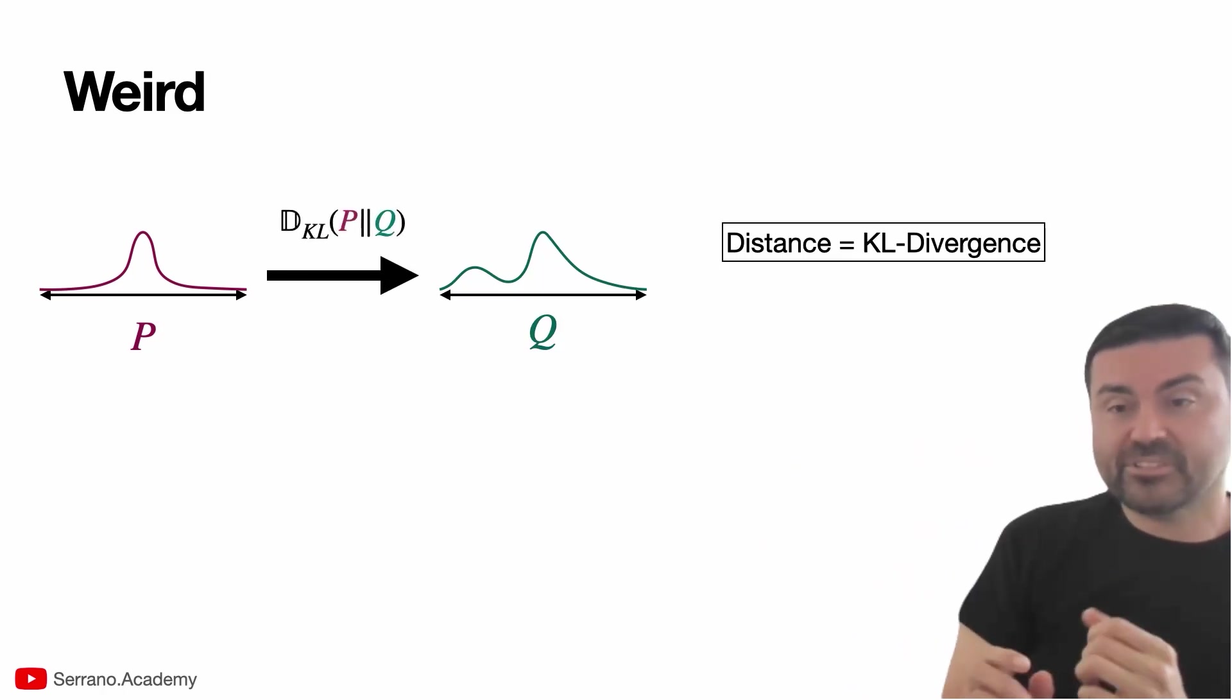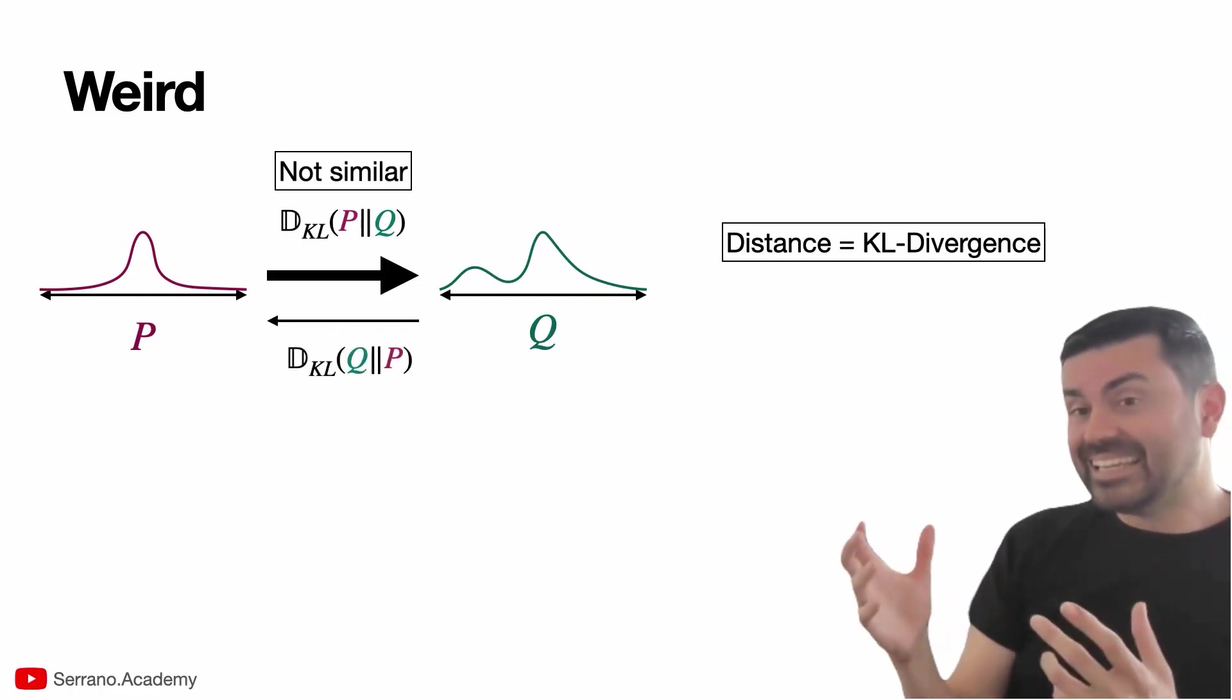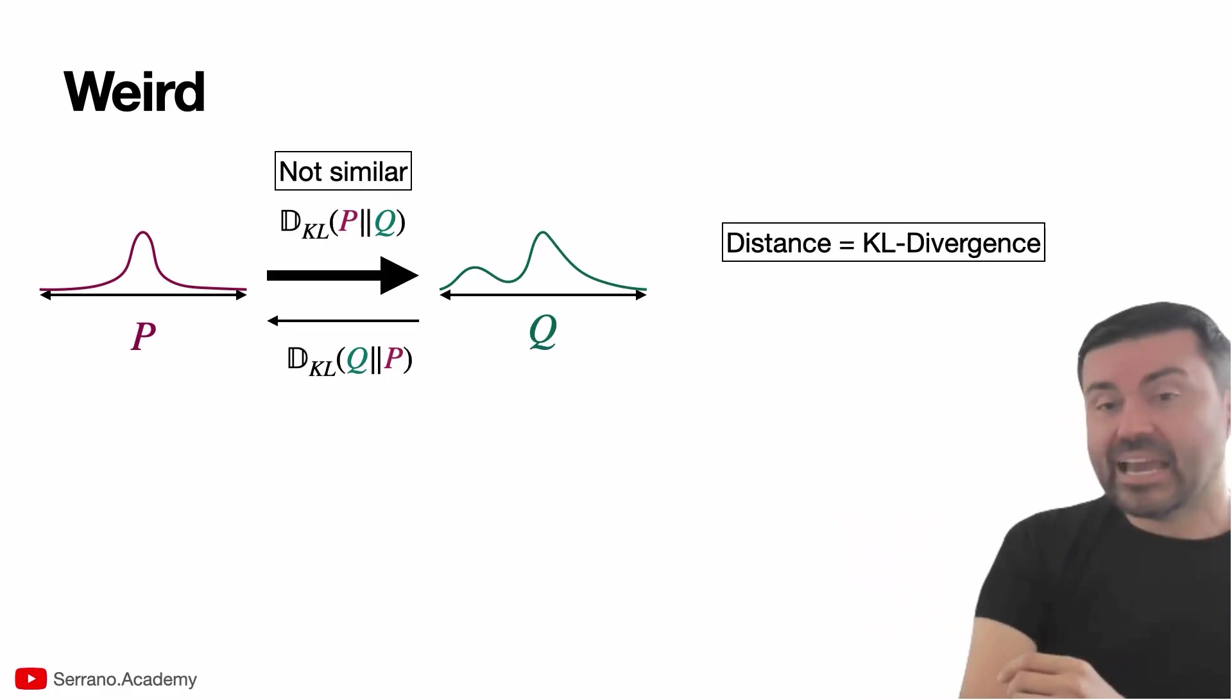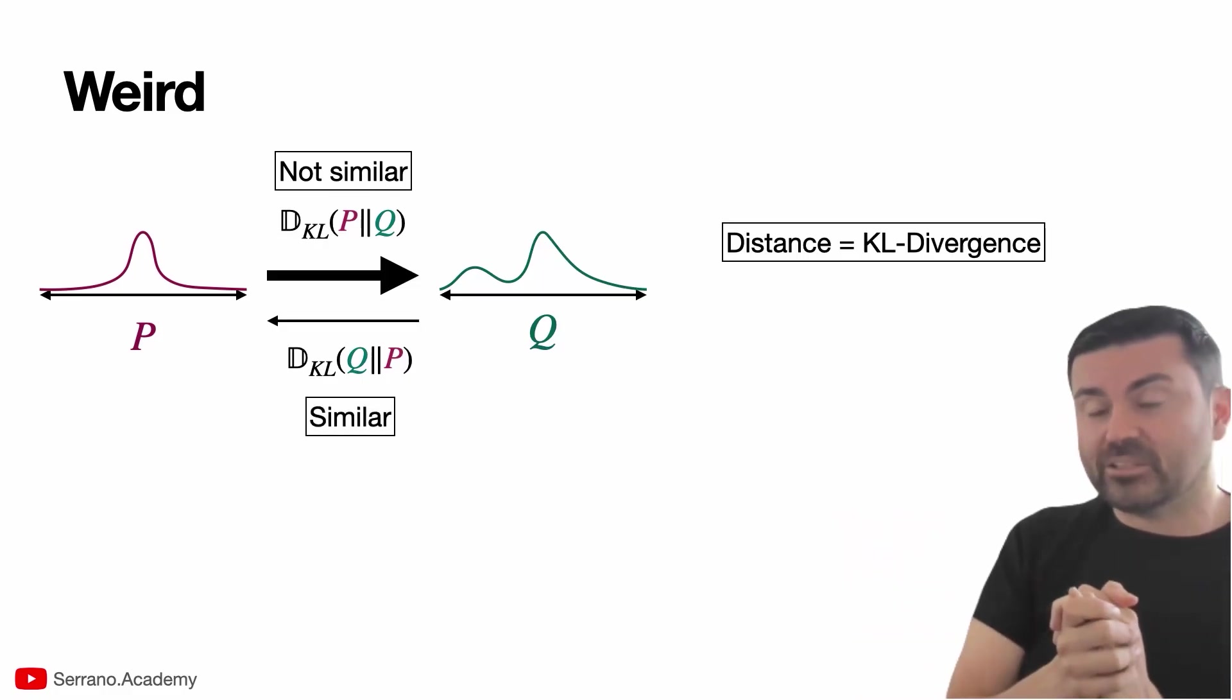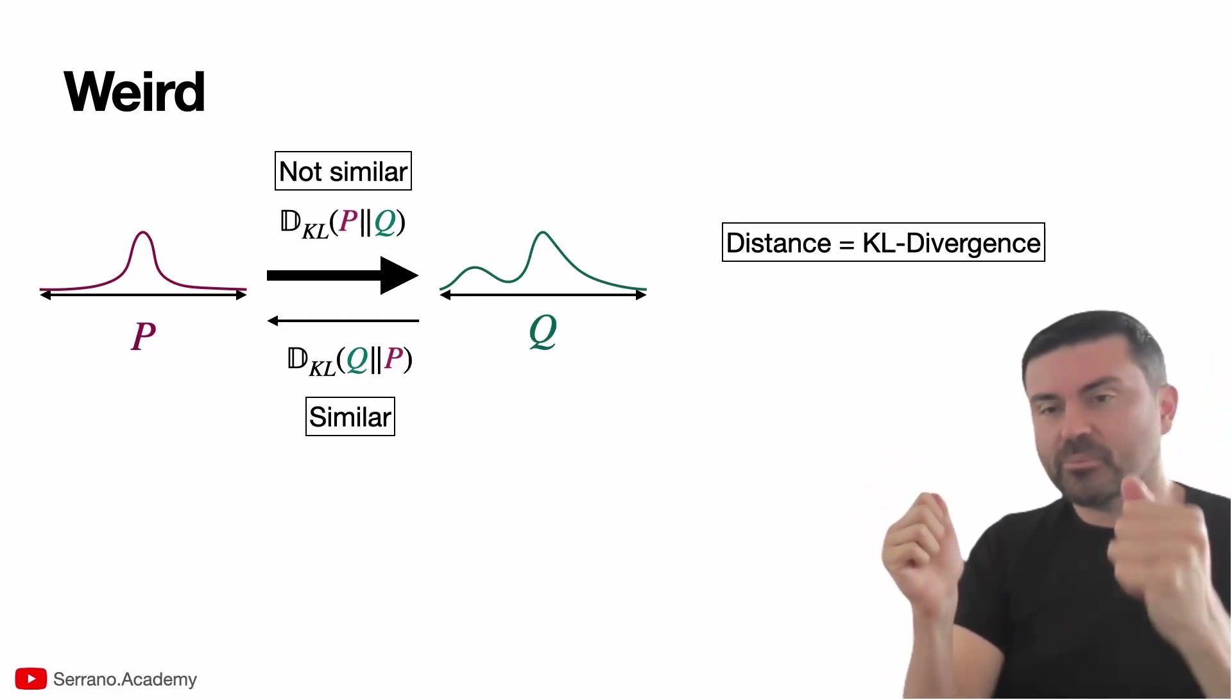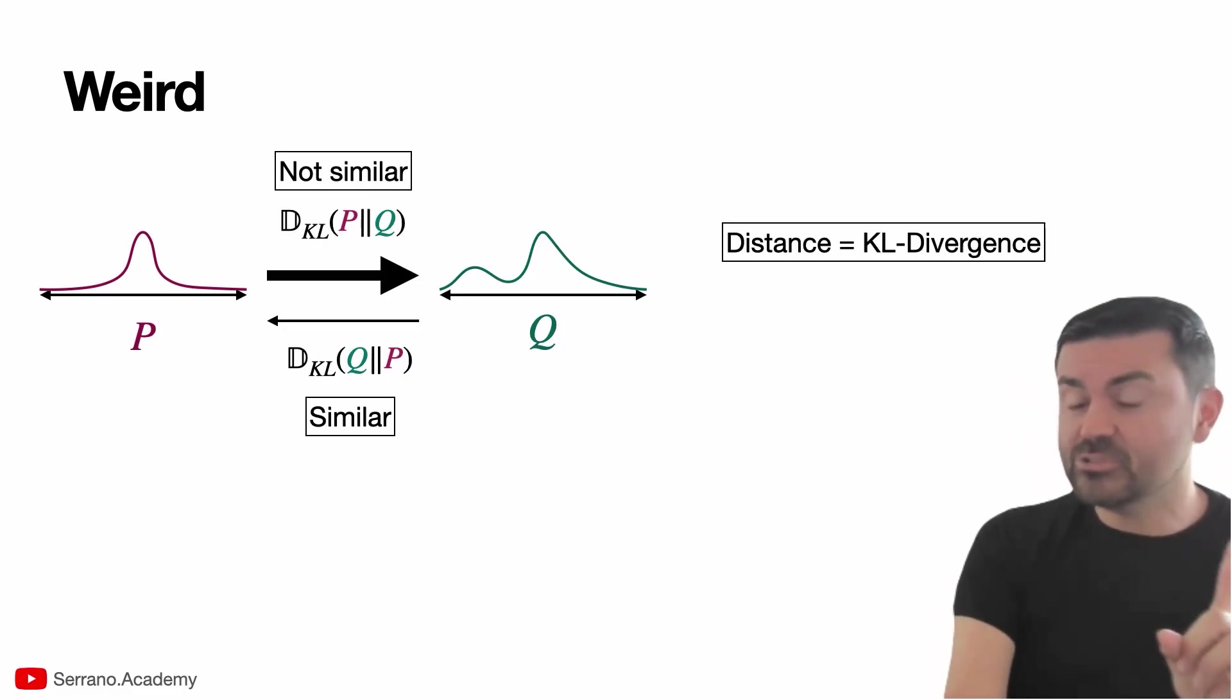But in here, there's something called the KL divergence of P and Q, which if it's large means they're not similar. And there's another distance between Q and P called the KL divergence of Q and P. And if that's, for example, small, then that means these two are similar. So how is it that one thing can be similar to another one, but the other one can be dissimilar to the first one? That sounds very counterintuitive, but when you start looking at what the distributions do, it's actually pretty intuitive.